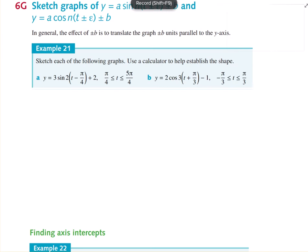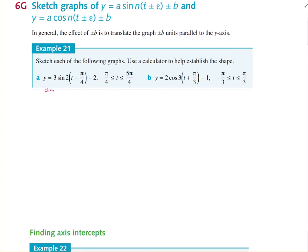The first example is y equals 3 sine 2(t minus pi on 4) plus 2 — actually the same as the example we did in 6F, except we're simply adding 2 to it. We've got an amplitude of 3. The period is 2 pi on n, where n equals 2, so the period is 2 pi on 2, which is pi.